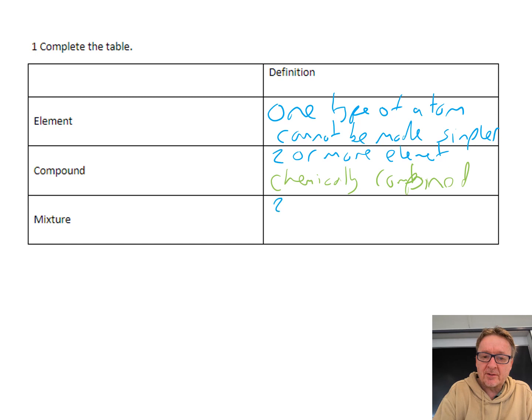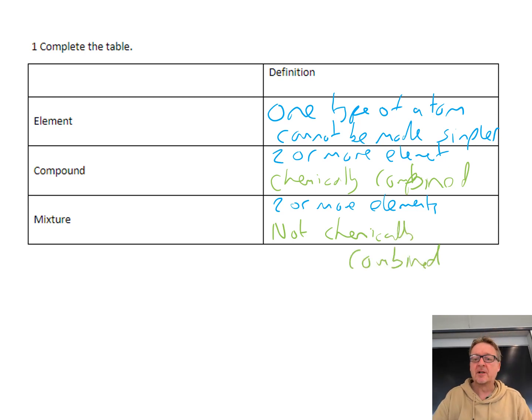A mixture is two or more elements not chemically combined. That's the big difference. With a compound you can't separate them, but with a mixture you can separate them.